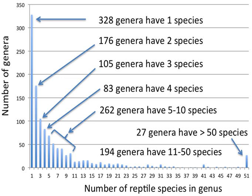A genus, plural genera, is a taxonomic rank used in the biological classification of living and fossil organisms, as well as viruses, in biology. In the hierarchy of biological classification, genus comes above species and below family.